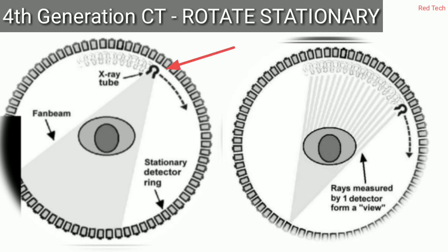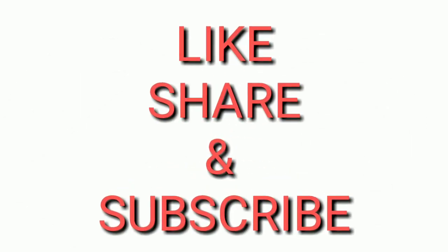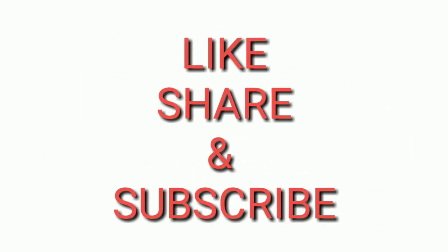Here you can see the fourth generation CT diagram. You can see the X-ray tube above, making a fan beam, and around it the ring structure where all detectors are fixed and stationary. The diagram shows this arrangement in detail.